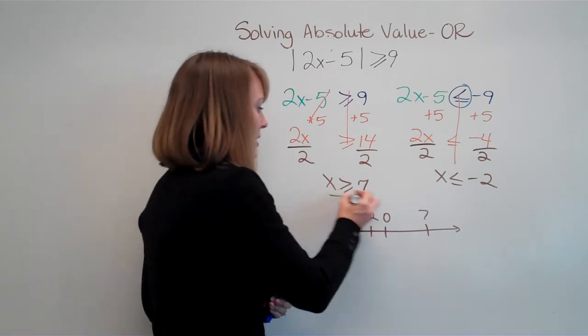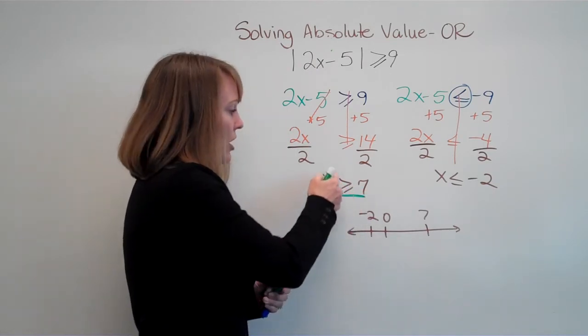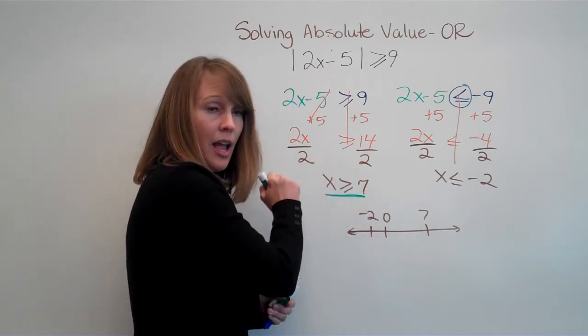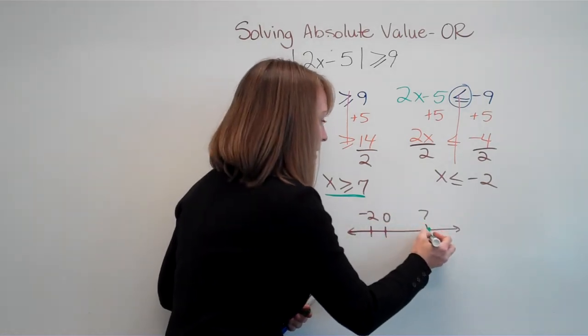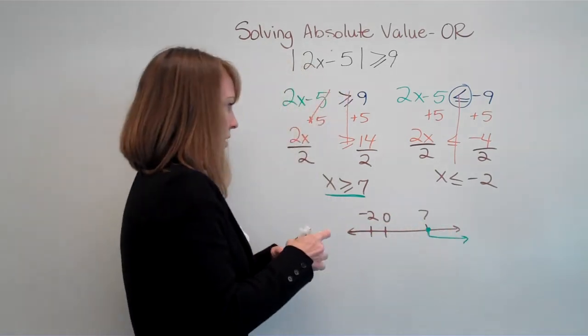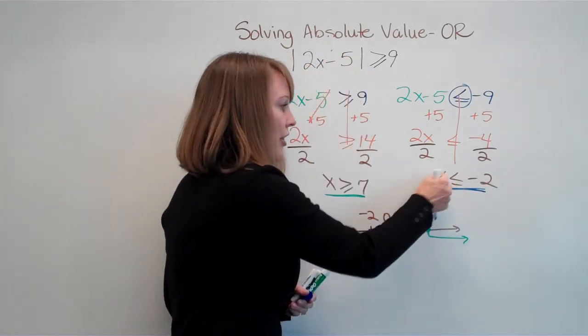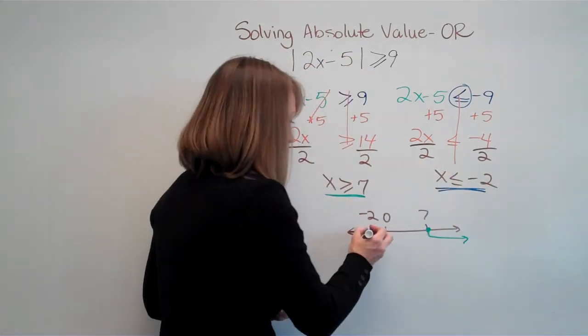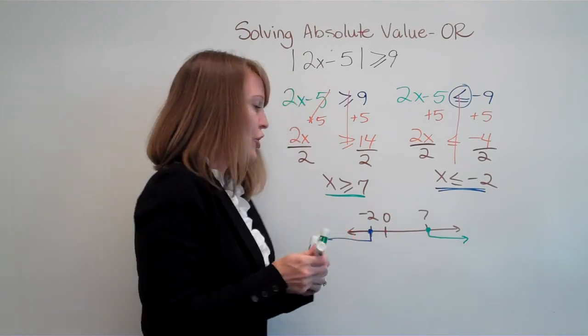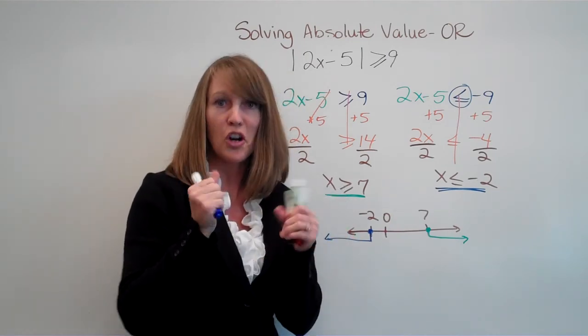It's going to be a closed circle and I want all the numbers that are bigger than positive 7. Okay, this one over here, again a closed circle. And I want all the numbers that are smaller than negative 2. Beautiful. Looks like an OR. We got it right.